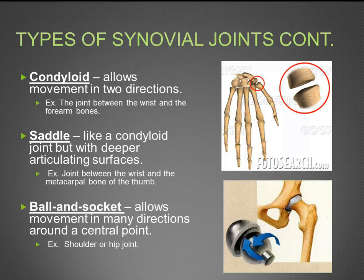Next is ball and socket, which allows movement in many directions around a central point — for example, your shoulder and your hip. You can move up, down, left, right, all around, just like a ball and socket as shown in the picture.